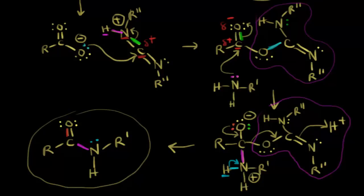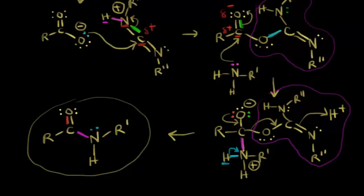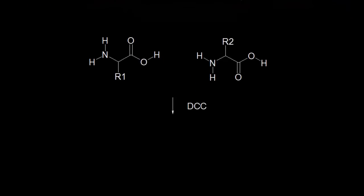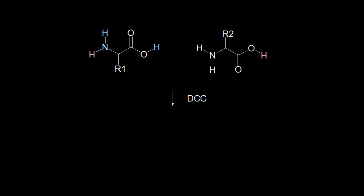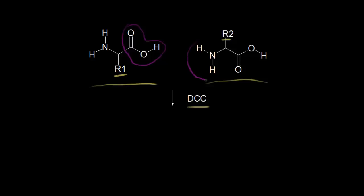One of the most famous uses for DCC is to react amino acids together to form peptides. If we have an amino acid on the left with R1, and an amino acid on the right with R2 — not worrying about stereochemistry — we could join these amino acids using DCC. We look for our carboxylic acid on the left and our amine on the right, and DCC could form an amide. You have to be a little more careful here because you have an amine on this side and a carboxylic acid on the other side.